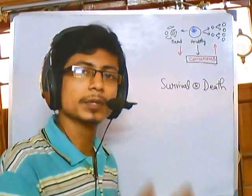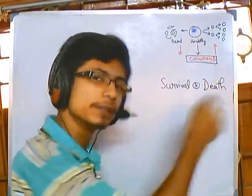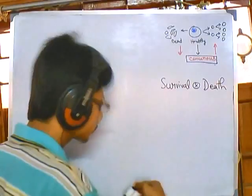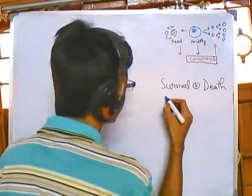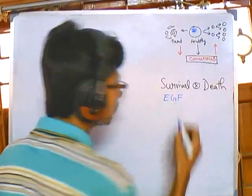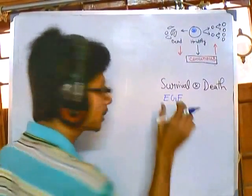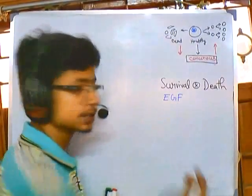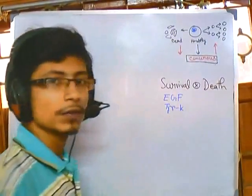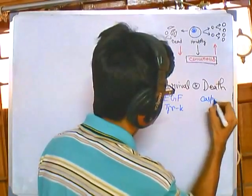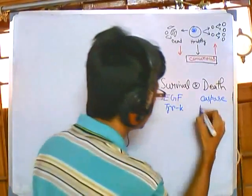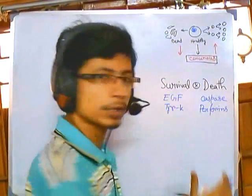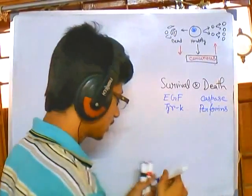Since proteins are produced from signals in genes, genes are definitely involved in this process. At the protein level for survival, we have growth factors like epidermal growth factor and tyrosine kinases. For cell death, there are caspase proteins, perforins, and granzymes.